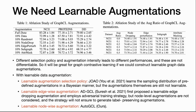Is there any learnable data augmentation? There is. JOAO introduced a learnable augmentation selection policy in a Bayesian manner, but the augmentations themselves are still not learnable. ADGCL should be the first work to introduce learnable edge-wise augmentations, but node-level augmentations are not considered, and the strategy does not ensure label-preserving augmentations. Now, we have proposed node-wise augmentations along with a special training strategy which makes the whole framework generate more label-preserving augmentations.